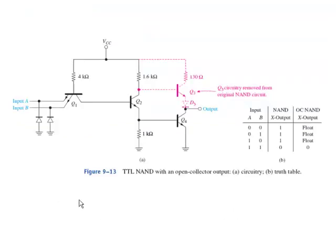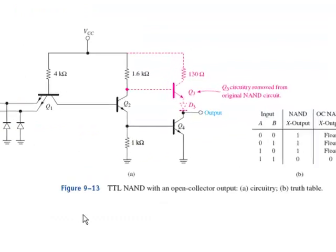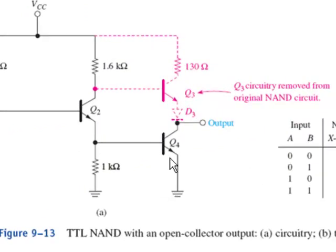The next topic in the section deals with open collector outputs. With an open collector output you take the totem pole Q3 transistor with the 130 ohm and the D3 and you remove it. Now when the circuit produces a low output Q4 will be shorted and the output will go to ground just like it would with a regular gate. However for the high condition rather than having Q3 become a short and apply the VCC down to the output, the output goes into a new state called the float state.